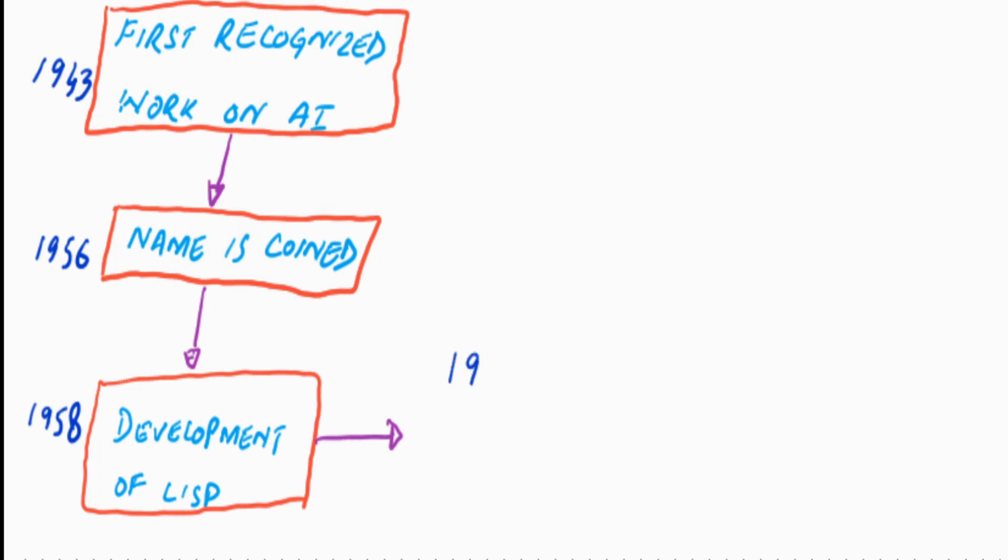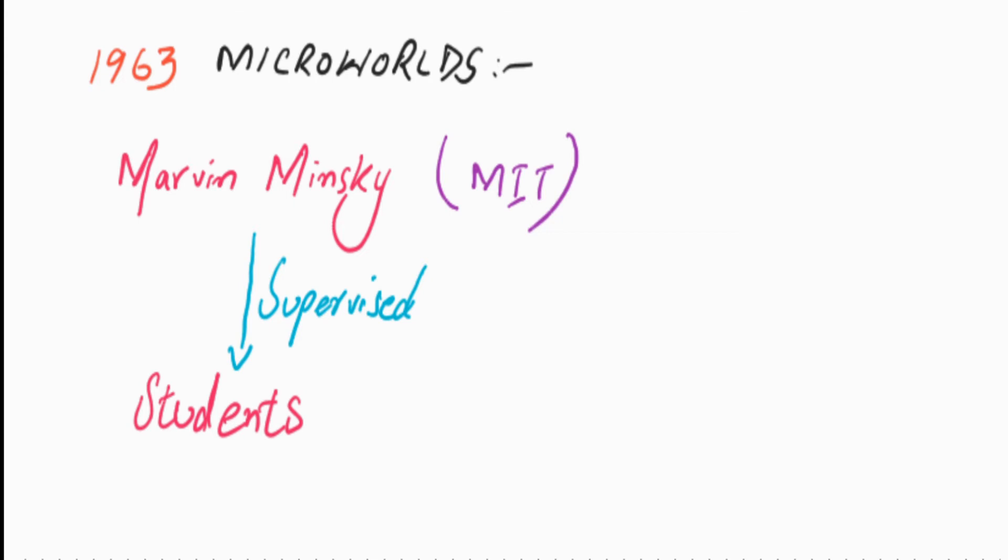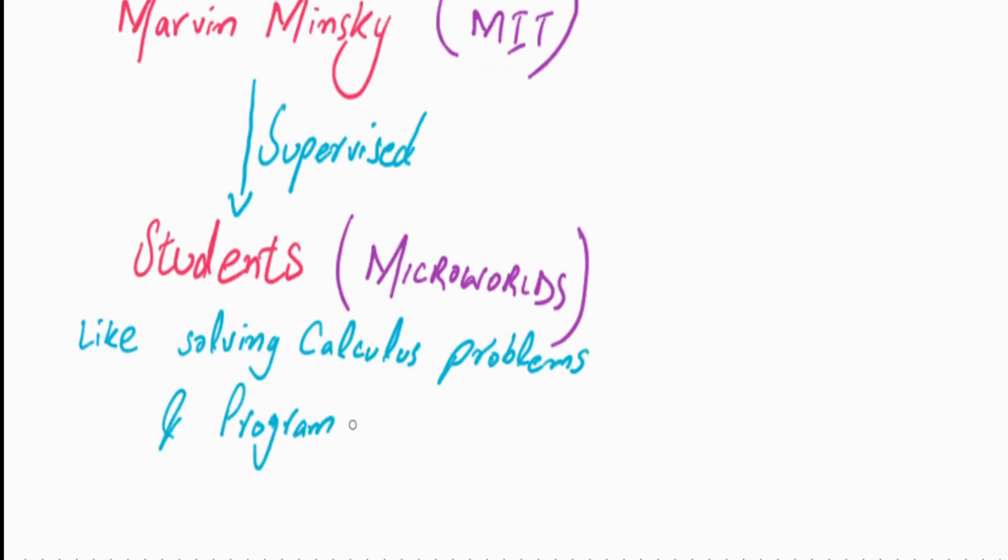In 1963, some programs known as microworlds were created. Marvin Minsky, a researcher at MIT, supervised a number of students who chose limited problems that appeared to require intelligence to solve. These limited domains became known as microworlds. Some developed programs that solved calculus problems, whereas some developed programs which were able to accept inputs in a very restricted subset of English language and generated answers to these statements.